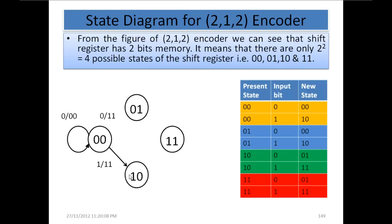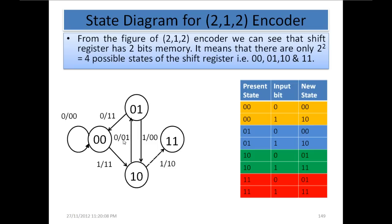If the present state is 01 and the input bit is 0, the output will be 11 and the new state will be 00. If the present state is 10 and the input is 0, the output will be 01 and the new state will be 01. For state 11, if the input bit is 0, the output will be 10 and the new state will be 01.